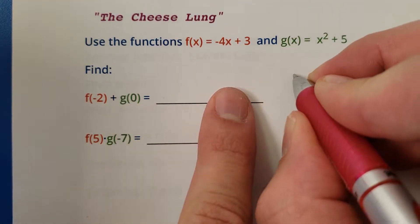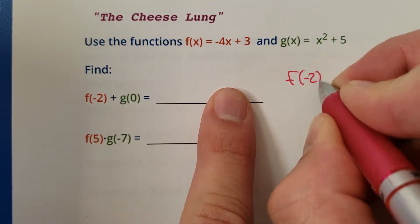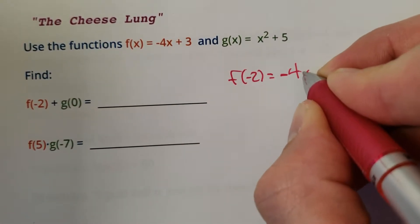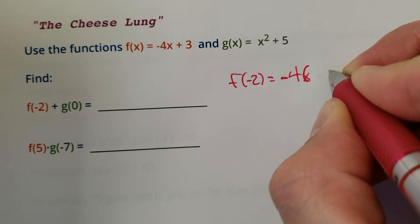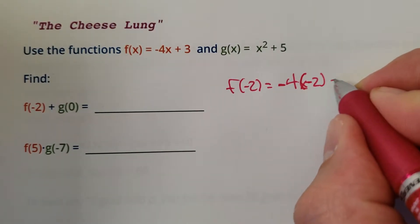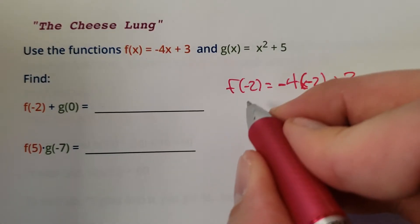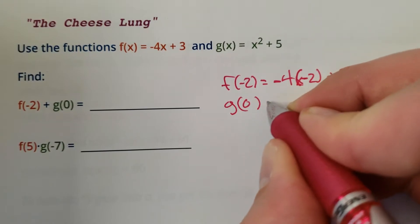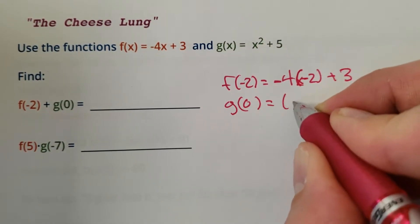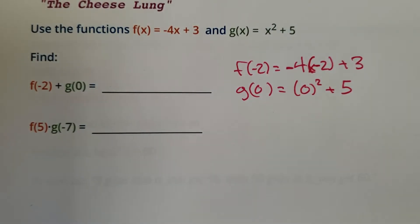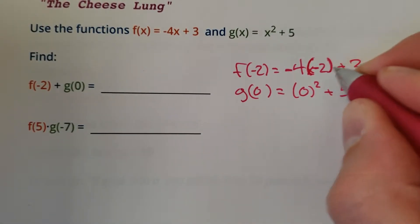So let's do f of negative 2. You're going to equal negative 4 times negative 2. I'm not copying it down, I'm filling in numbers here. And then g of 0 is going to be 0 squared plus 5. There you go. It's all in the rewrite. Try not to mess it up as bad as I did.